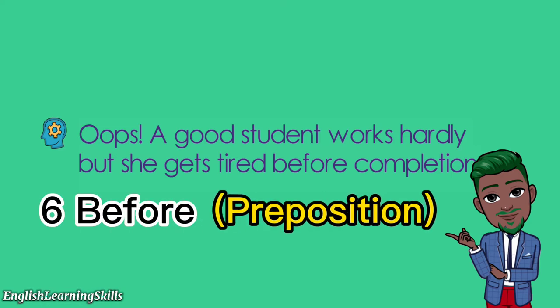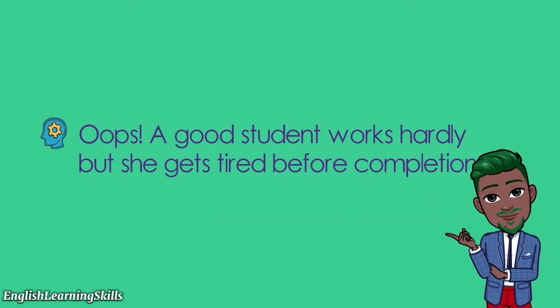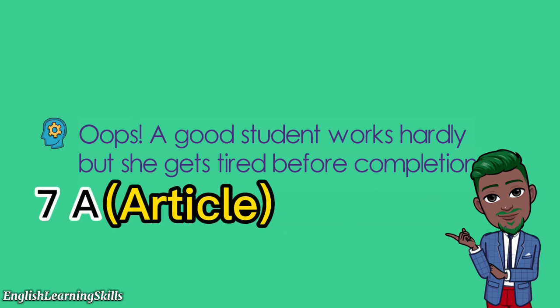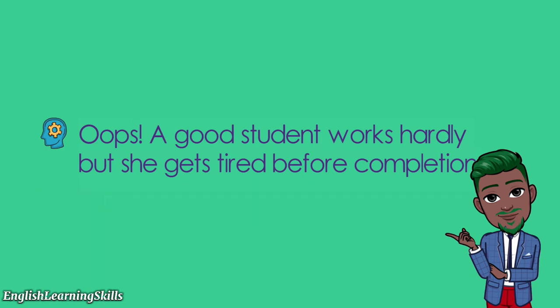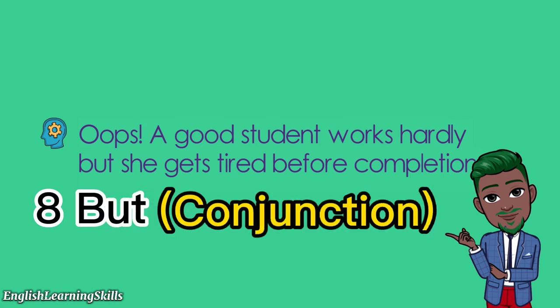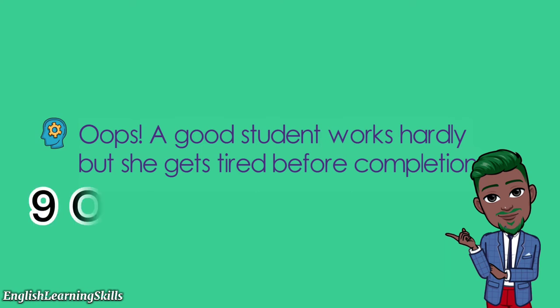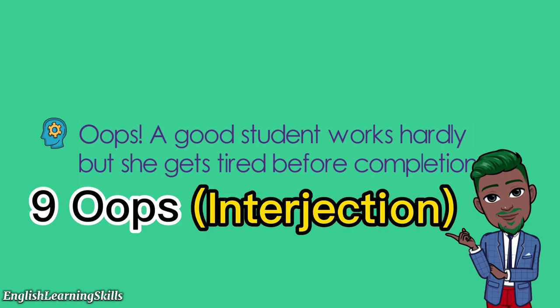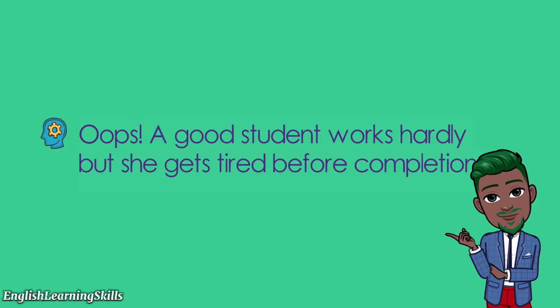Seven — 'a' is an article; eight — 'but' is a conjunction; and nine — 'oops' is an interjection. Awesome!